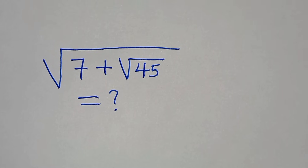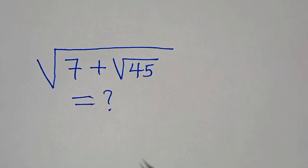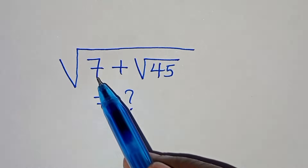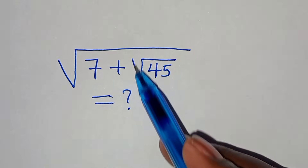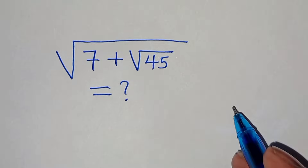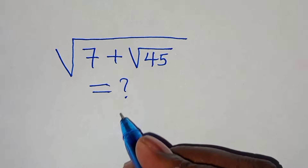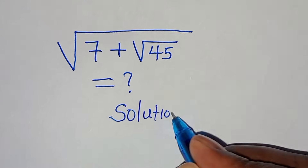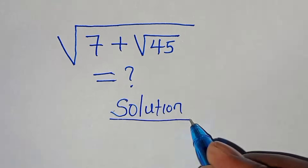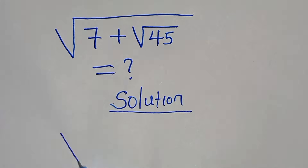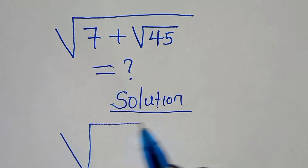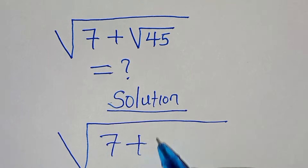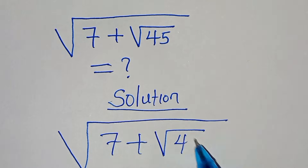You're welcome to solve this nice square root math problem, which is the square root of 7 plus square root of 45. Let's provide a solution. We have the square root of 7 plus square root of 45.